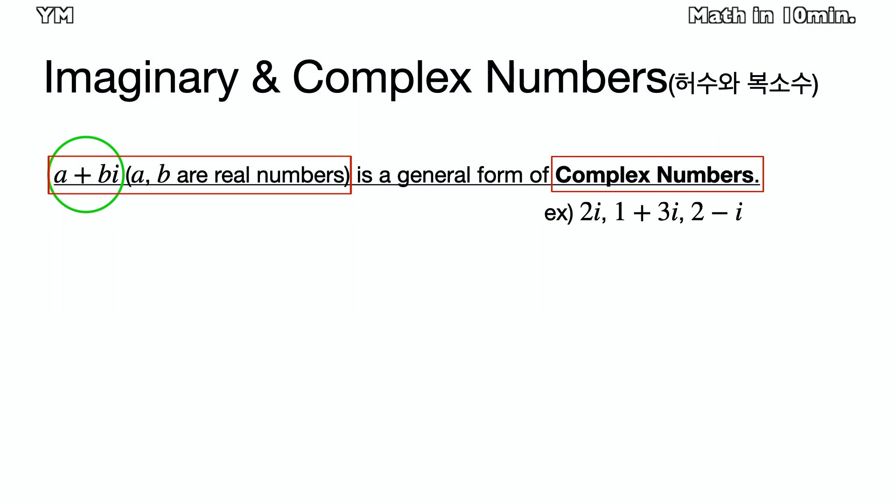A form of an addition of a real number and an imaginary number is called a complex number.